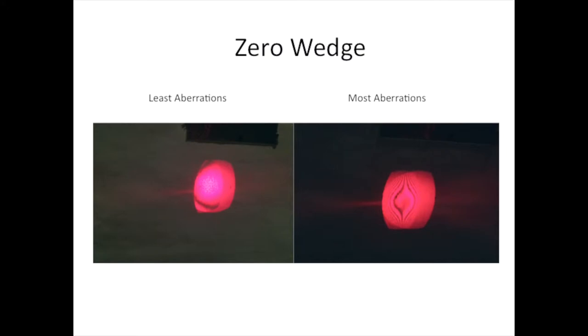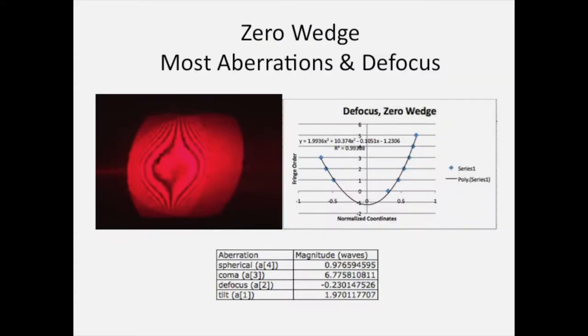We could then estimate the amount of aberrations using Jim Wyant's method. First we numbered the fringes from right to left: 3, 2, 1, 0, 1, 2, 3, 4, 5. Then using image processing software, we found the x positions of each of those fringes, plotted them, and found a best fit curve. We took those coefficients and using his method, we were able to find the different amounts of aberrations.